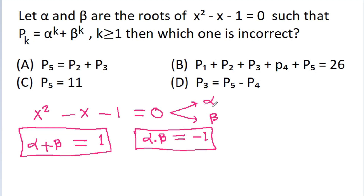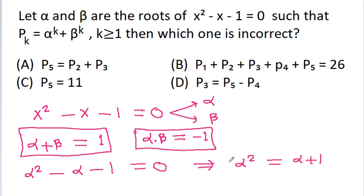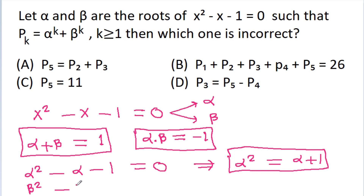Since alpha is a root of this equation, alpha must satisfy it. So we get alpha squared minus alpha minus 1 equals 0, which gives us alpha squared equals alpha plus 1. Similarly, beta is also a root of this equation, so beta squared minus beta minus 1 equals 0, giving us beta squared equals beta plus 1.